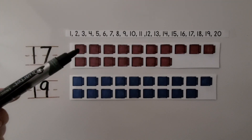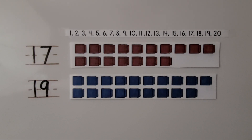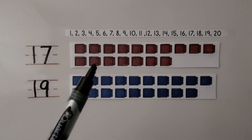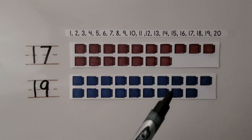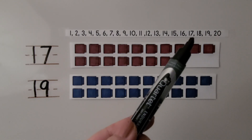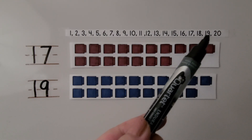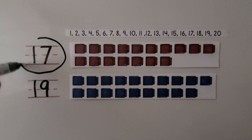Here are 17 brown cubes and 19 blue cubes. We need to circle the lesser number. The lesser number comes first in counting order and has fewer cubes. We can see there are not as many cubes here — this one has 2 more than this one. 17 comes first in counting order. 17 is less than 19. If you said 17, you're right!